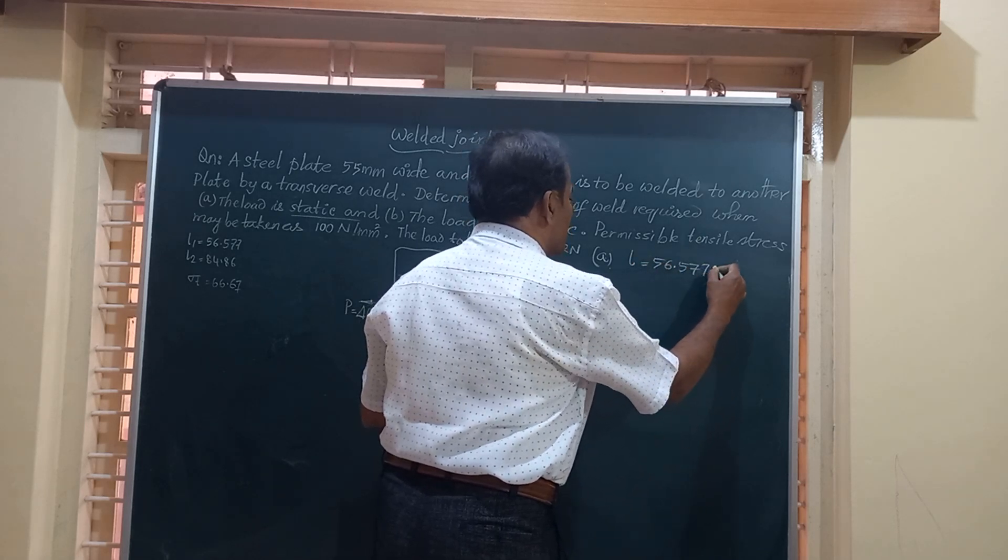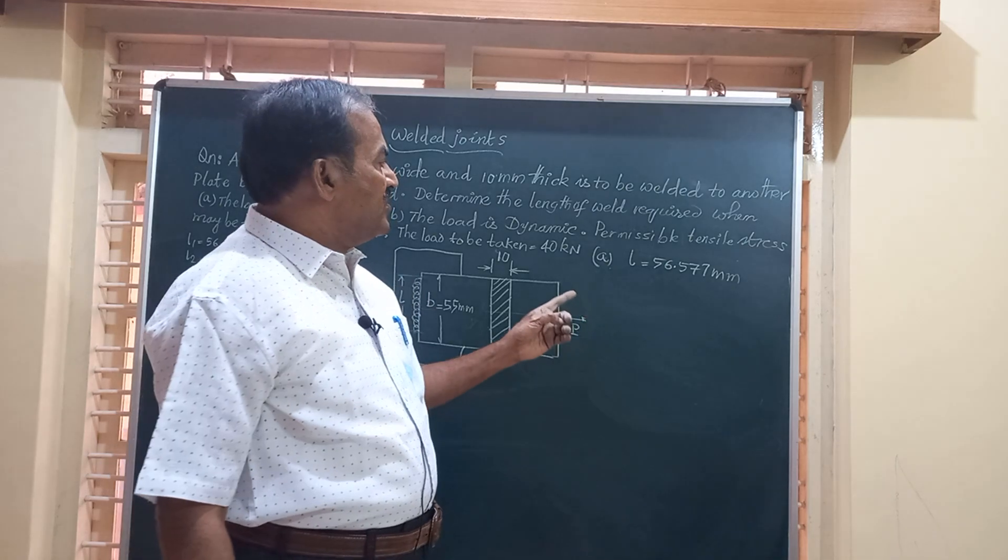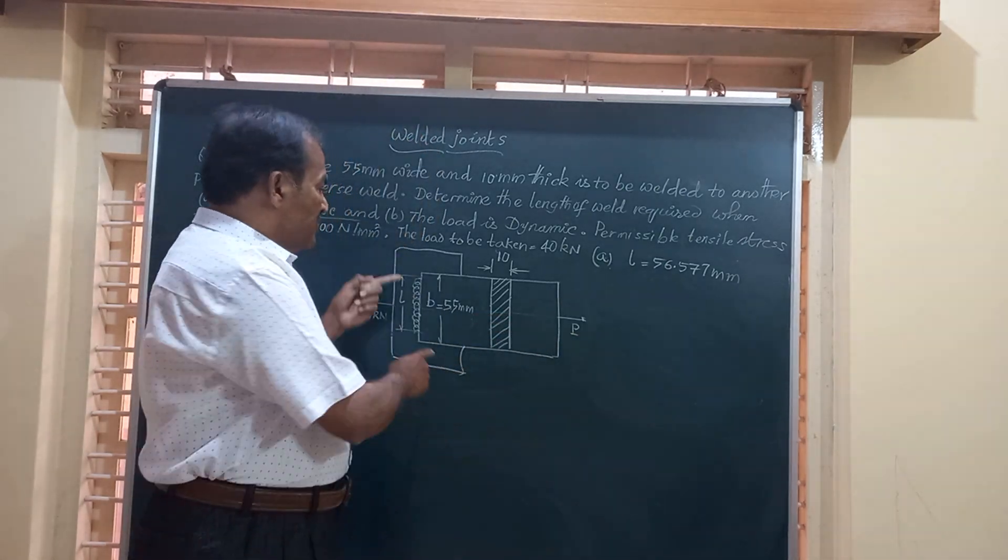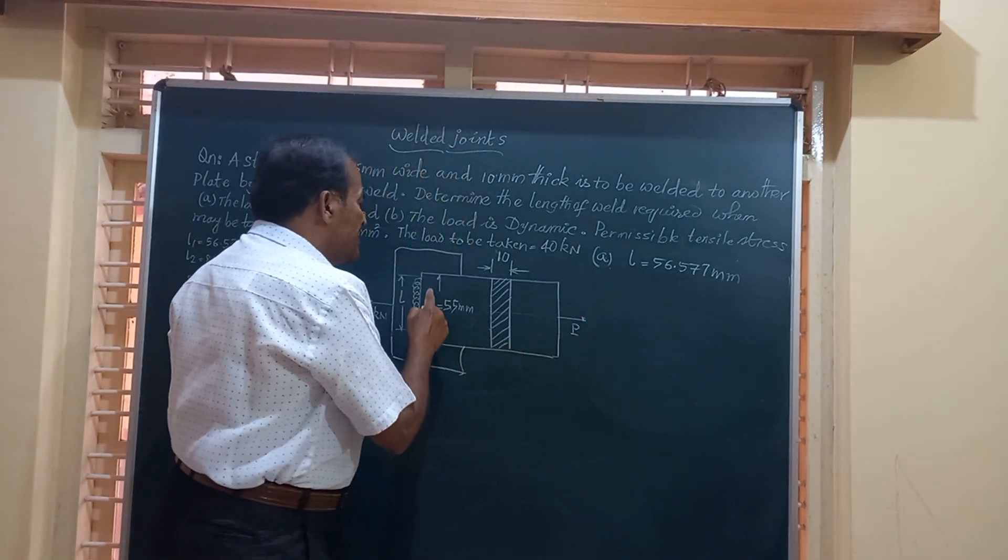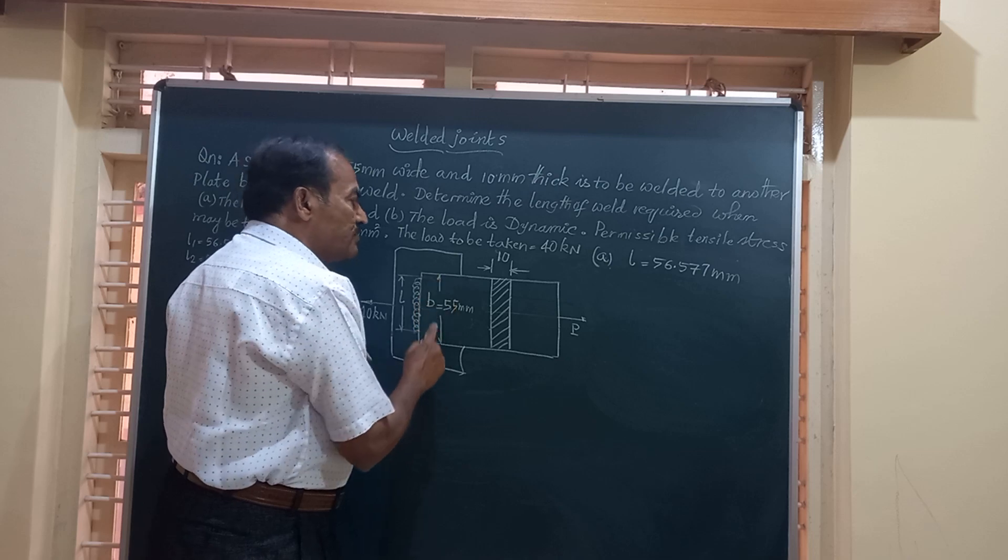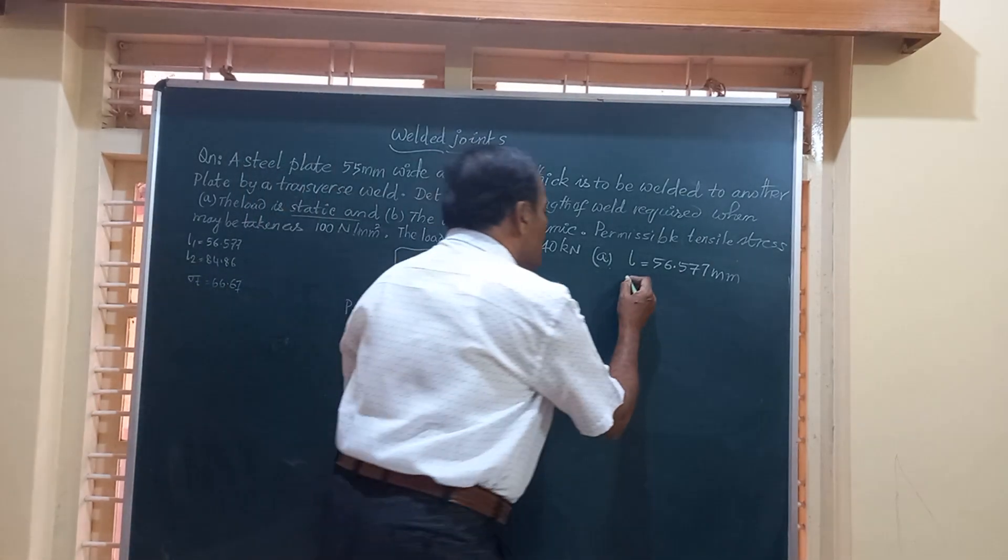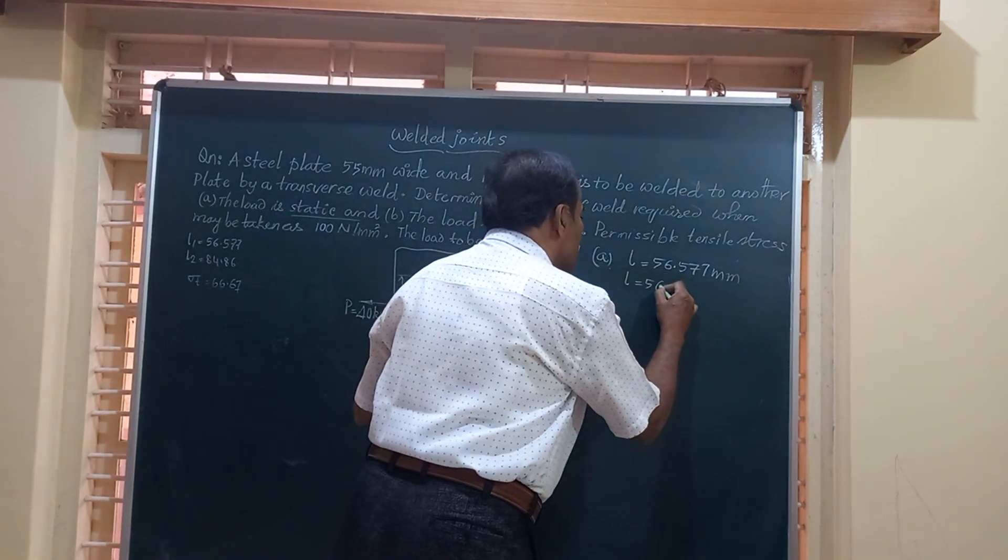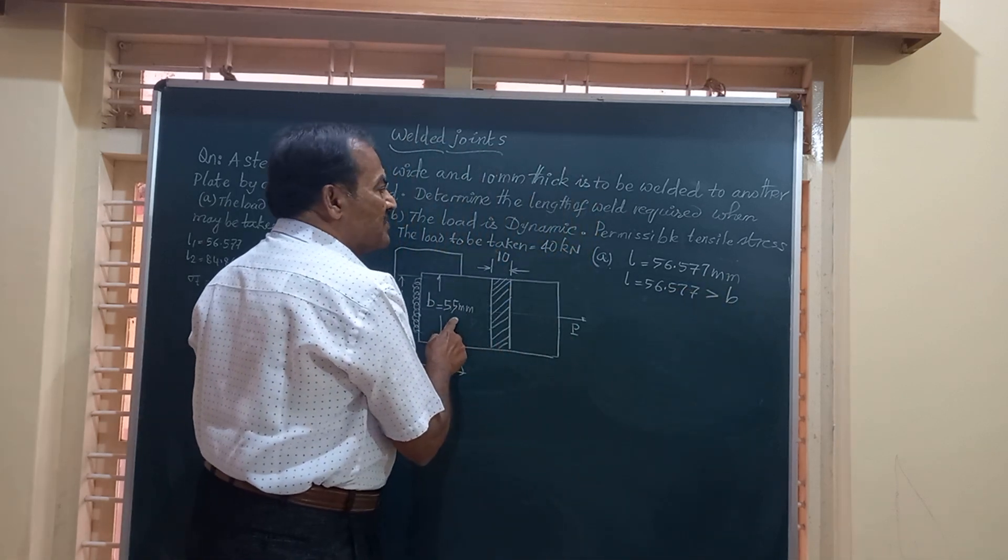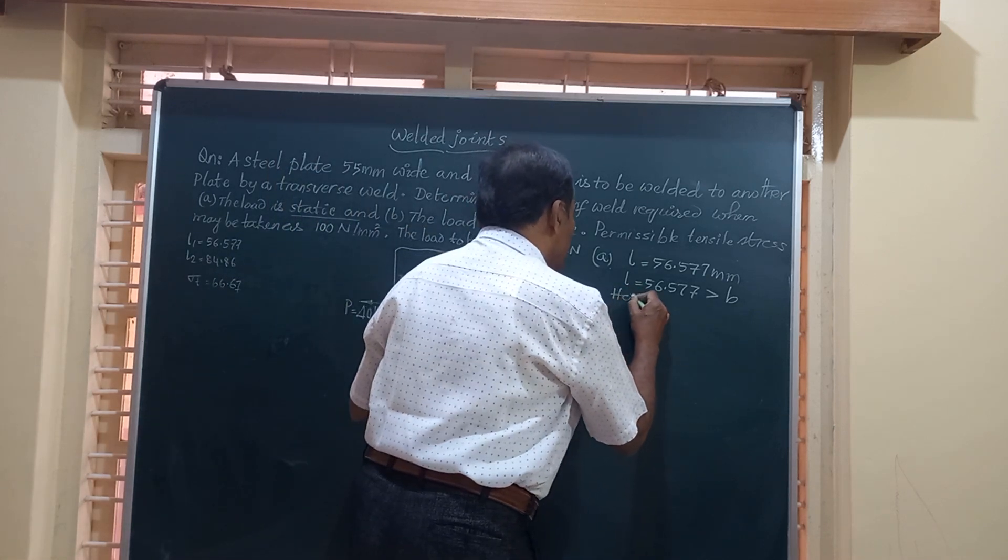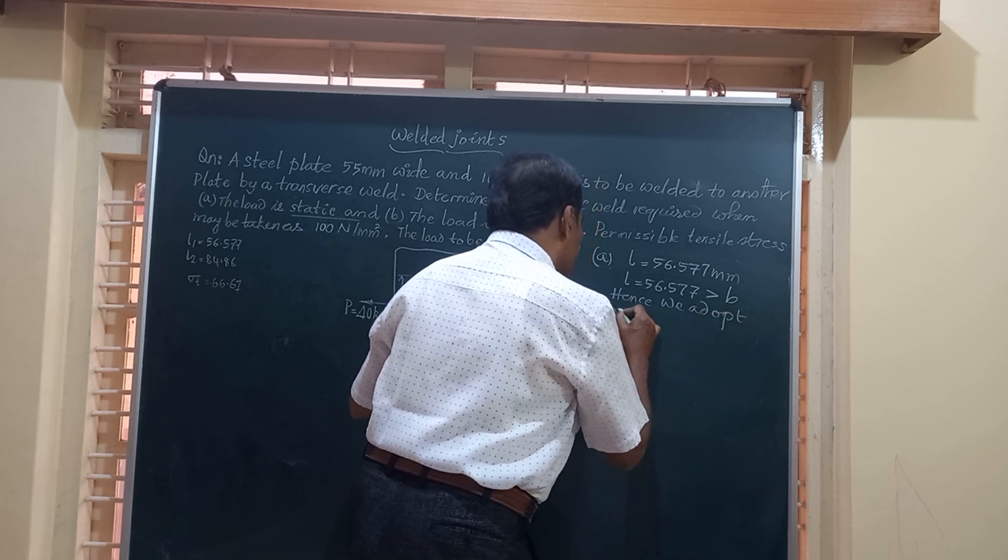Friends, if you compare this length of welding with the width of the plate, you find the length of welding required is higher than the width of the plate. And hence, a single transverse weld is not sufficient. So L is equal to 56.577, which is greater than B, that is the width of the plate, and we adopt double transverse weld.